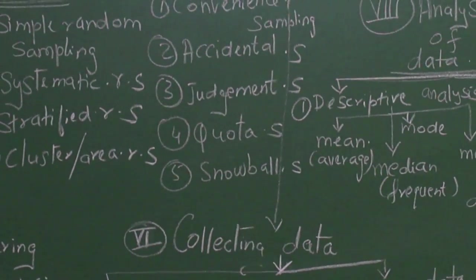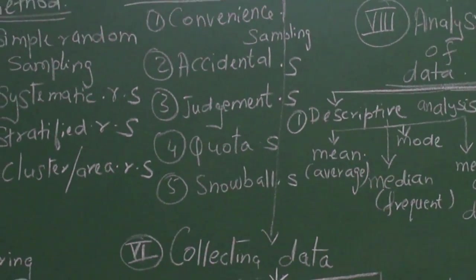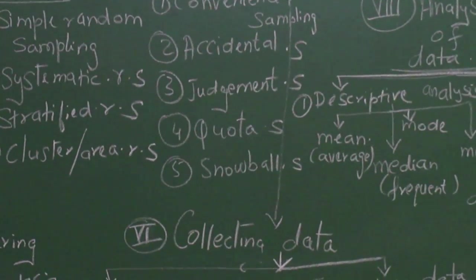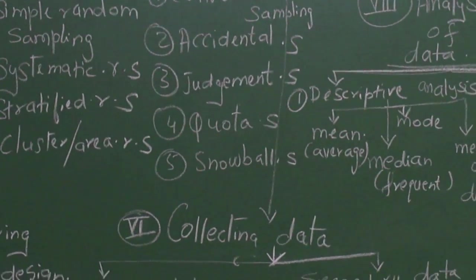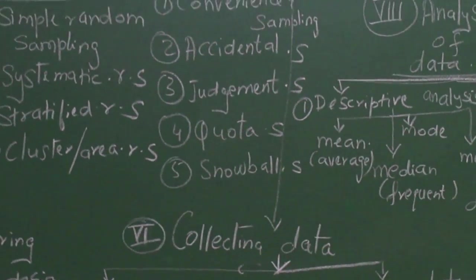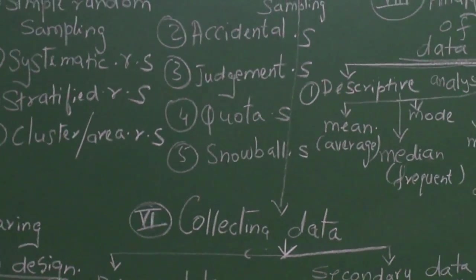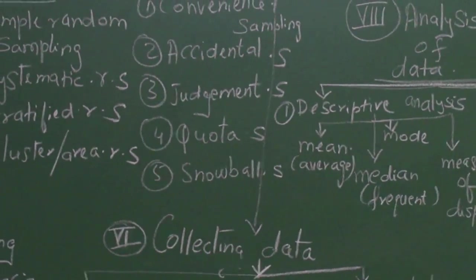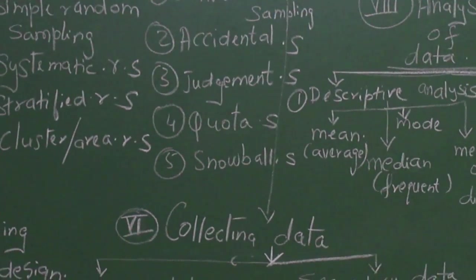The second is accidental sampling. I am sitting at my home, people are coming for tuitions, and I tell them okay please since you have come here, fill up the questionnaires for me. That becomes accidental - just accidentally they happen to be there and I have given them the questionnaire.